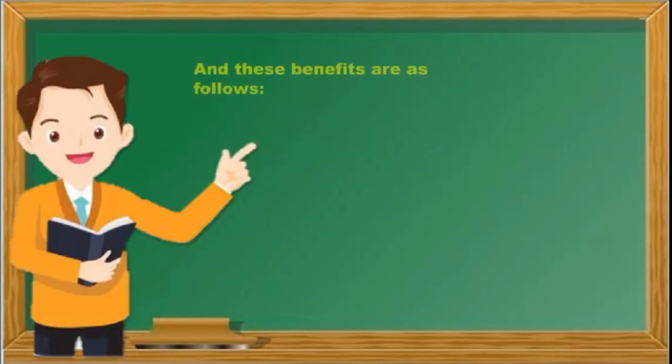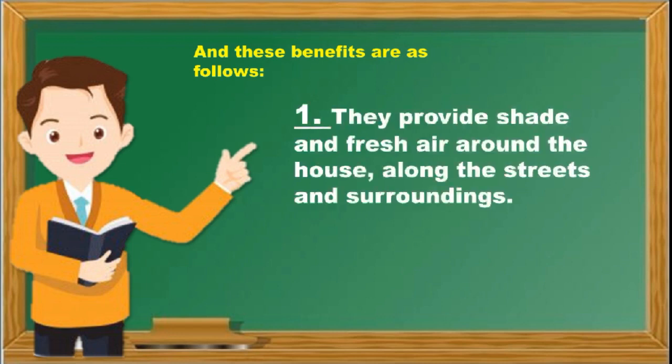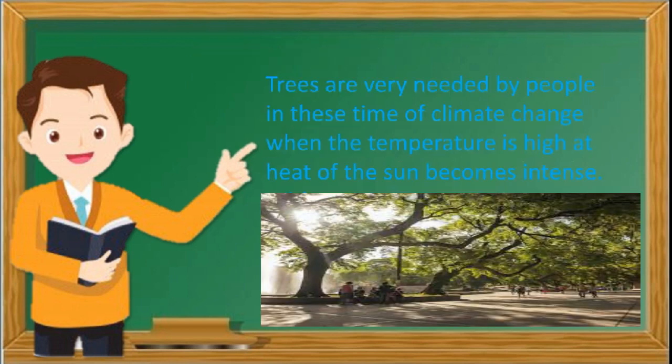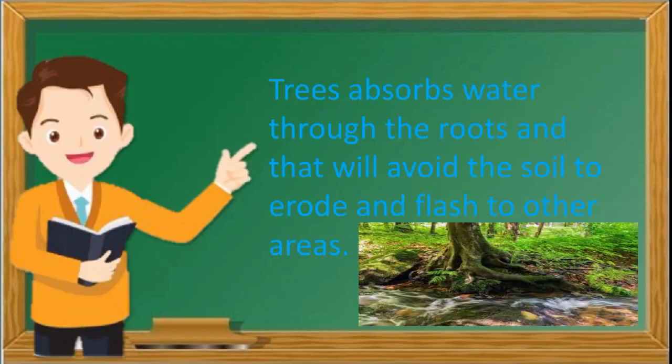Number one, trees provide shade and fresh air around the house, along the streets, and surroundings. These are very much needed in this time of climate change when the temperature is high at the heat of the sun. Number two, they protect the soil from erosion. Trees absorb water through the roots, which prevents the soil from eroding and washing away to other areas.